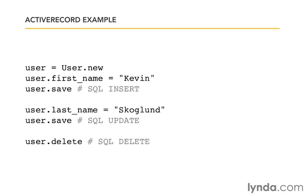I start out by setting the variable user equal to a new instance of the class User, which is going to be an Active Record class. Next I set the attribute for first name equal to Kevin, and then say user.save. With that one simple command, I've written an SQL insert statement and inserted the row in the database. This is a much easier way to do it than writing raw SQL.